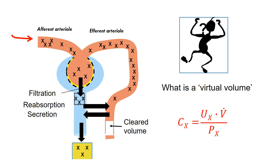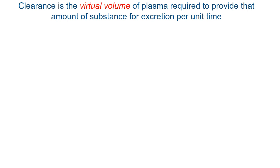A second problem students often have is they do not understand what is meant by a virtual volume. If you look at your equation to calculate renal clearance, CX — the cleared plasma volume — is a virtual volume. So the question is: what do we mean by a virtual volume? In the next rather complicated diagram, we will try and explain the meaning of a virtual volume as required by the definition of renal clearance.